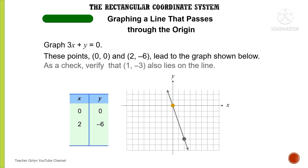As a check, verify that (1, -3) also lies on the line. Indeed, the point (1, -3) also lies on the same line, confirming our graph.